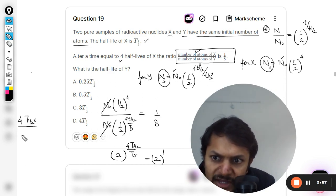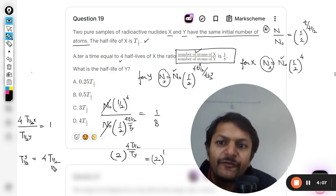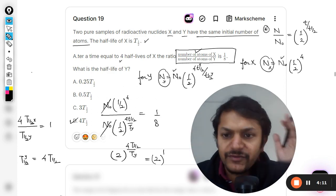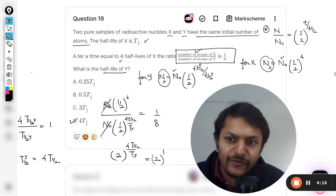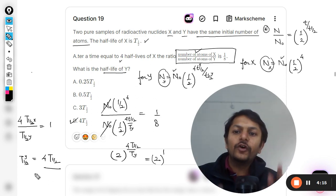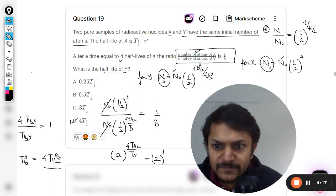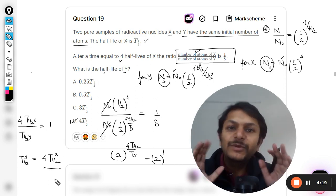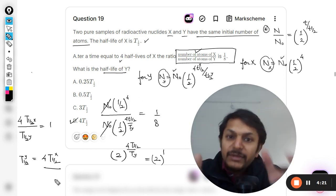From here I can say 4 times t-half of X divided by t-half of Y, this is equal to 1. Clearly, the t-half for Y will be 4 times t-half for X, and D is the option that is given here. You got it? Half-life of Y is equal to 4 times the half-life of X. My students, be very careful about the symbols that I am going to use here.